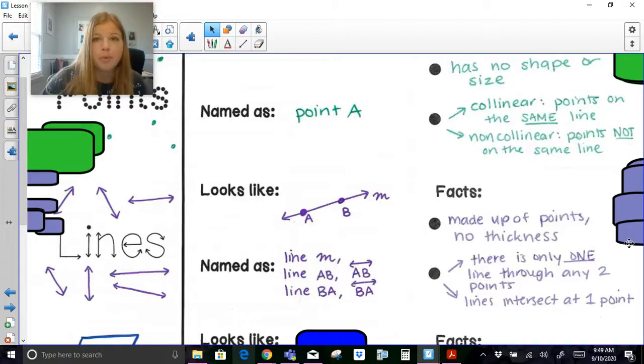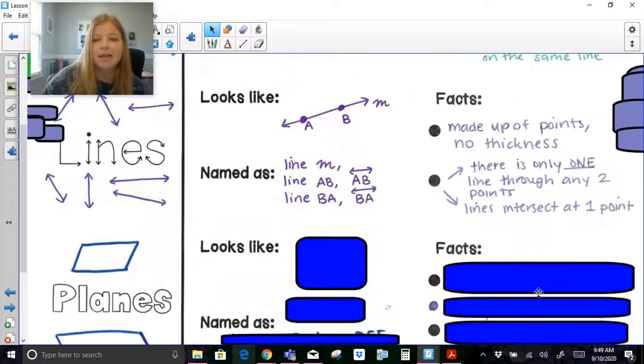Facts about lines: they're made up of points with no thickness. That was on the definition from the previous slide. There's only one line through any two points. If you look at these two points, A and B, there's only one line I could draw right through those points. And lines intersect at one point. If my arm is a line and my other arm is another line, they'll only ever intersect at that one point right there.